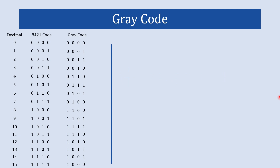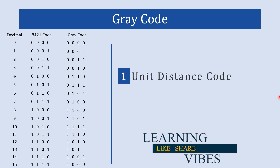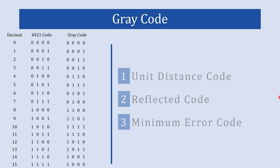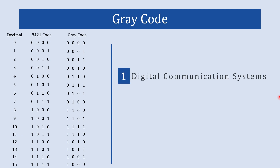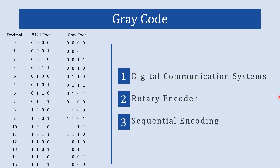This is why gray code is known as unit distance code. It is also known as reflected binary code and minimum error code. Because of these advantages, binary code is replaced by gray code in several applications. It is widely used in digital communication systems like TV, in rotary encoders, and in various applications where sequential encoding is necessary.